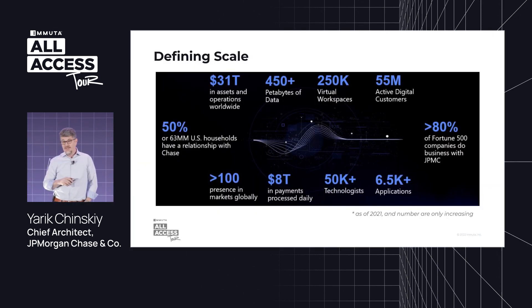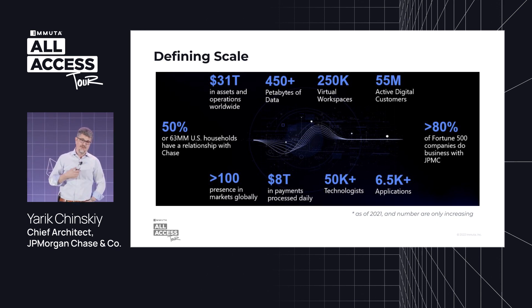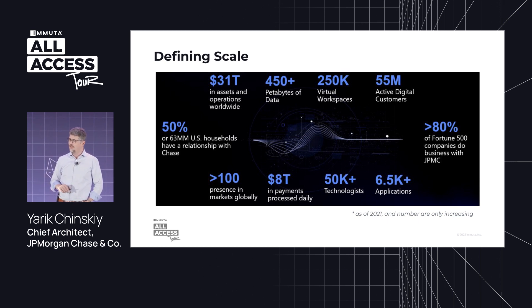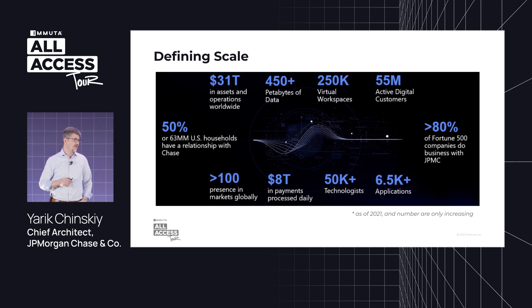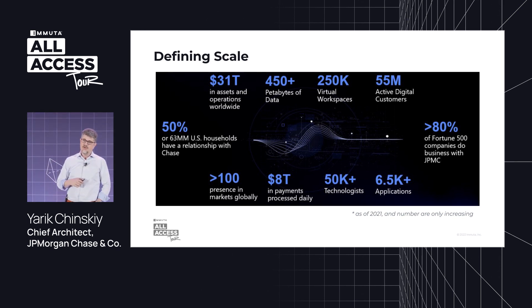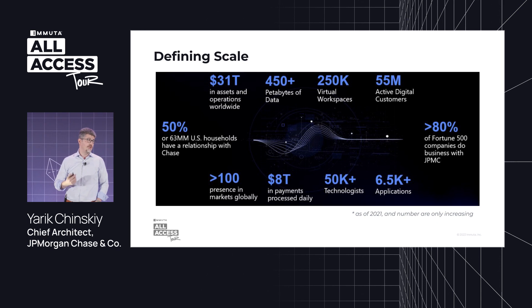Everybody knows about Chase. One of the oldest institutions — 1799 when we started as an organization. This slide is a bit old, about one year old, so imagine these numbers just keep growing. In the context of Immuta and data: we are in excess of 500 petabytes of data today. We have over 250,000 employees that use or work with data, and over 100,000 are people who actually work with data on a daily basis — analysts and data scientists. We are over 60,000 engineers, operating in over 100 different markets and over 60 different countries.